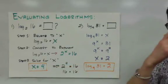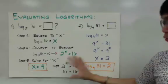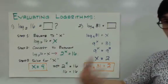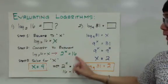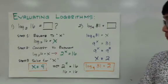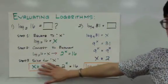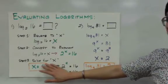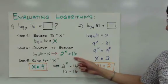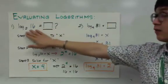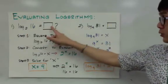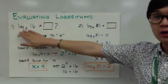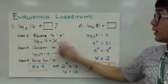This might sound a little unfamiliar at first, but in time, as we work through more examples, you'll understand logarithmic functions better. For now, follow the three steps: equate it to x, convert it to an exponent, and then think of a number to replace x with so the equation holds. So x is equal to 4, meaning logarithm of 16 base 2 is equal to 4.